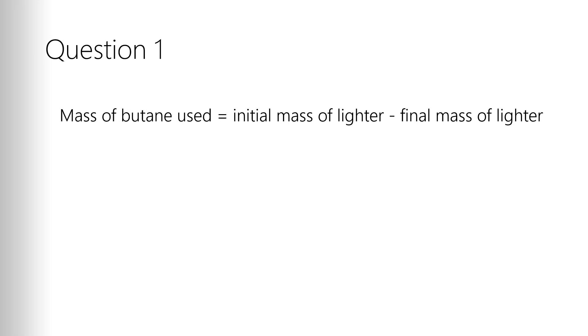The first question asks you for the mass of butane used. You get this from the initial and final mass of the lighters. When you release the gas underneath the cylinder and it bubbles up and collects in the cylinder, that is going to decrease the overall mass of the lighter. The difference in the two masses is the mass of butane you released. So if we had an initial mass of 14.55 and we got a final mass of 14.44, then the mass of butane used would have been 0.11 grams.